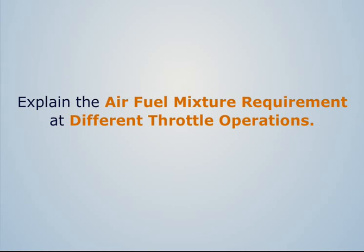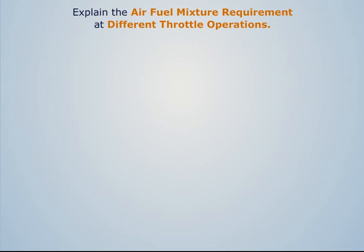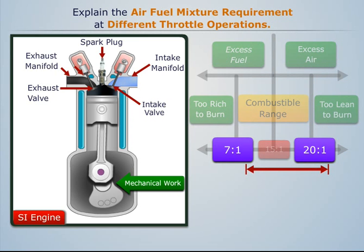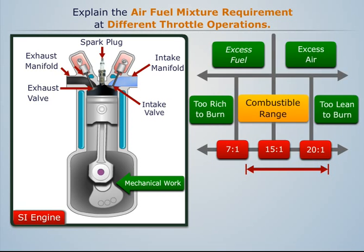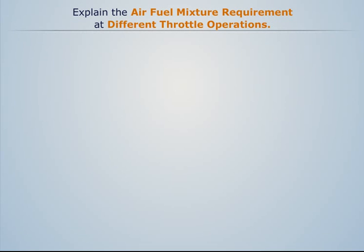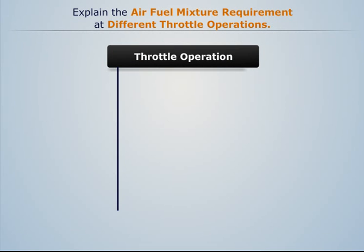Explain the air-fuel mixture requirement at different throttle operations. We know that in an SI engine, the stoichiometric air-fuel ratio is 15 to 1. Have you ever wondered why we keep the air-fuel mixture varying between 7 to 1 and 20 to 1 instead of fixing it at 15 to 1? This is because we require different air-fuel ratios at different throttle operations. Generally, throttle operation is divided into three ranges.